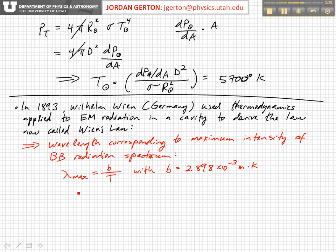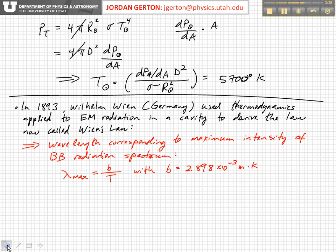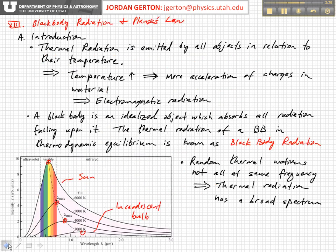So now we have two separate theoretical descriptions. One basically just tells you how the total power is related to the temperature, and the other one tells you how this maximum, the wavelength corresponding to the maximum power in the black body spectrum, is related to temperature.